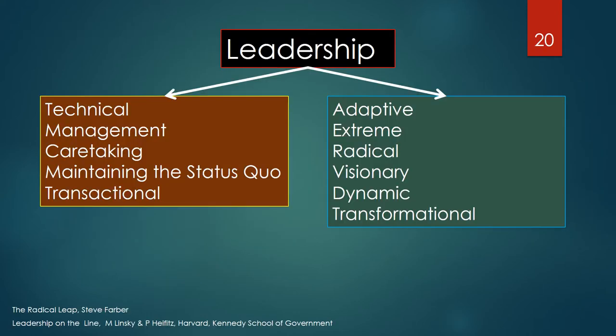According to Linsky and Heifetz's book Leadership on the Line, utilized at Harvard's Kennedy School of Government, leadership skills and their problems can be divided into two broad categories. Technical or management leadership — also described as caretaking of an organization, maintaining the status quo, and transactional. And adaptive — also described as extreme and radical by Steve Farber in his book The Radical Leap. Other adaptive attribute adjectives include visionary, dynamic, and transformational. Both technical and adaptive skills are needed for public health leaders to adequately run their organizations. Knowing the difference and when to appropriately use each set of skills is extremely important.